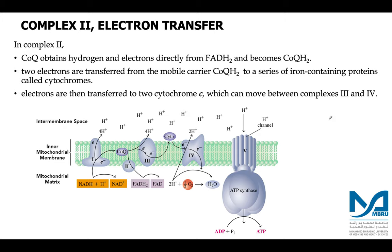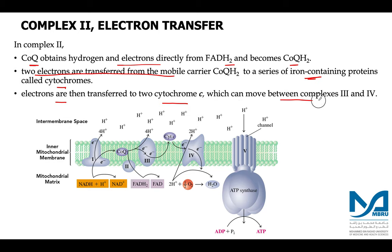The balanced equation for complex 2 is: FADH2 + coenzyme Q → FAD + coenzyme QH2. Two electrons are transferred from the mobile carrier coenzyme QH2 to a series of iron-containing proteins called cytochromes, and electrons are then transferred to two cytochrome c molecules which can move between complex 3 and complex 4. Importantly, along with the electron transfer taking place in complex 2, no proton is pumped out into the intermembrane space.